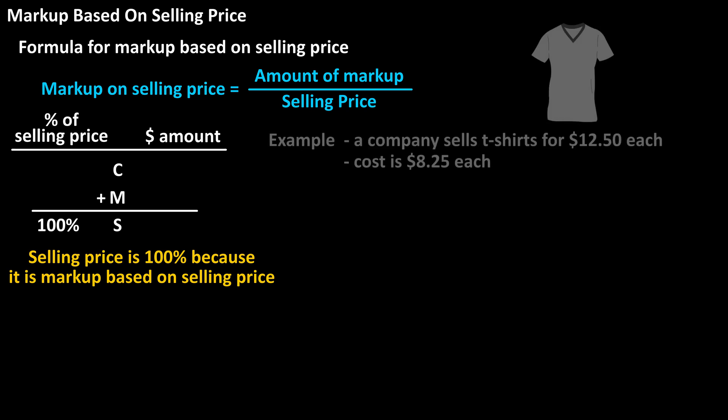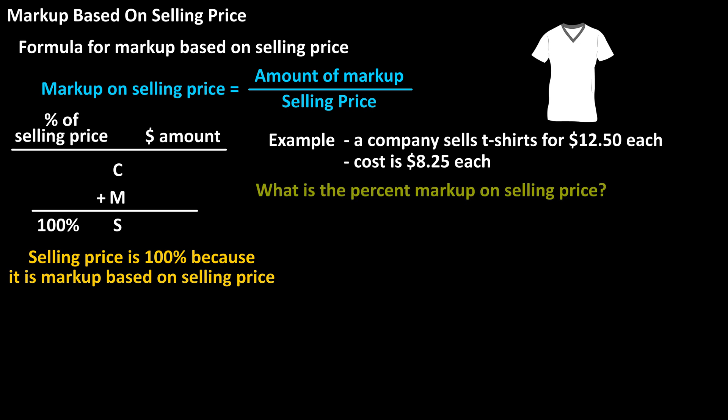Now let's look at an example. A company sells t-shirts for $12.50, and they pay $8.25 for each t-shirt. What is the percent markup on selling price? We can fill into the table what we know: the selling price is $12.50, and the cost is $8.25.